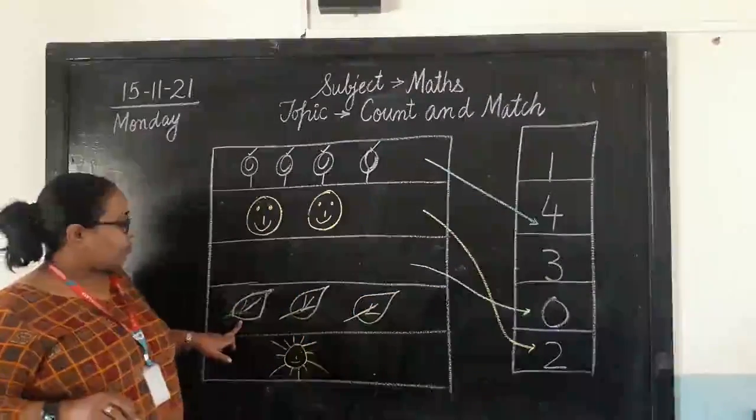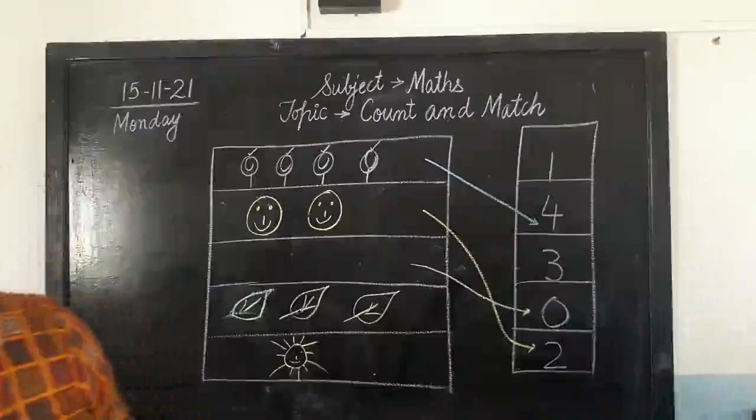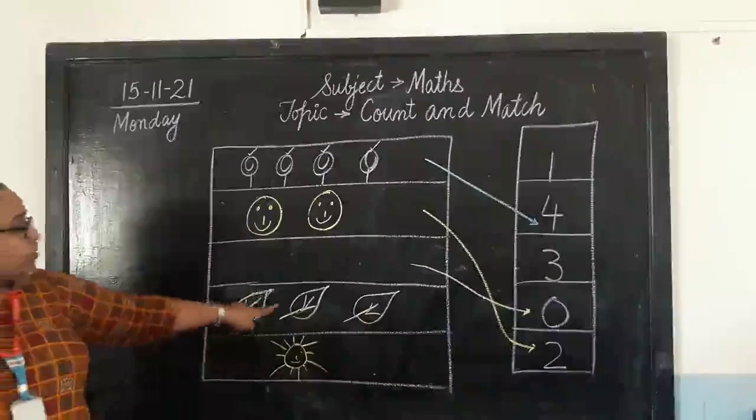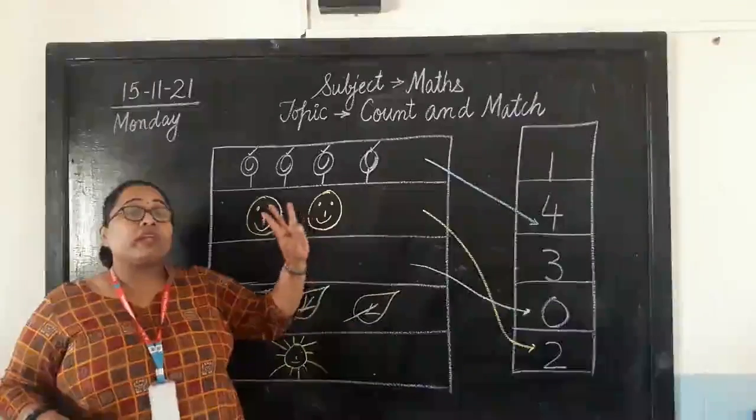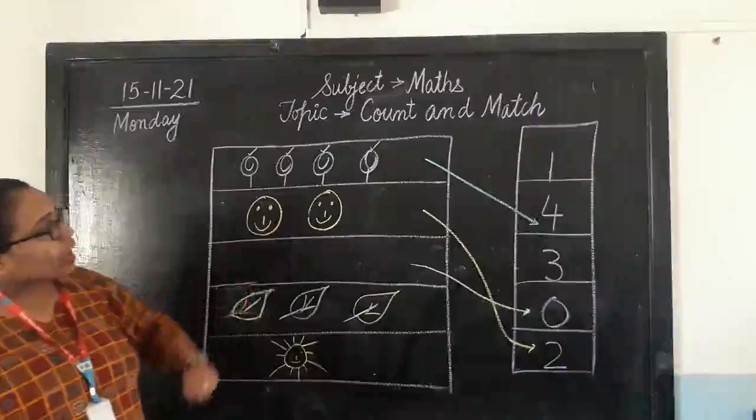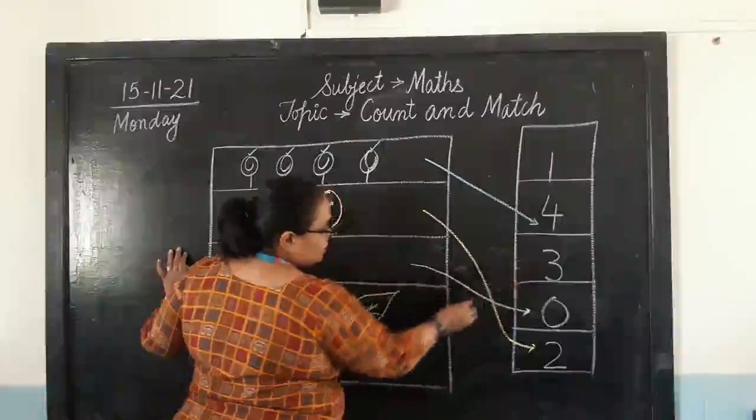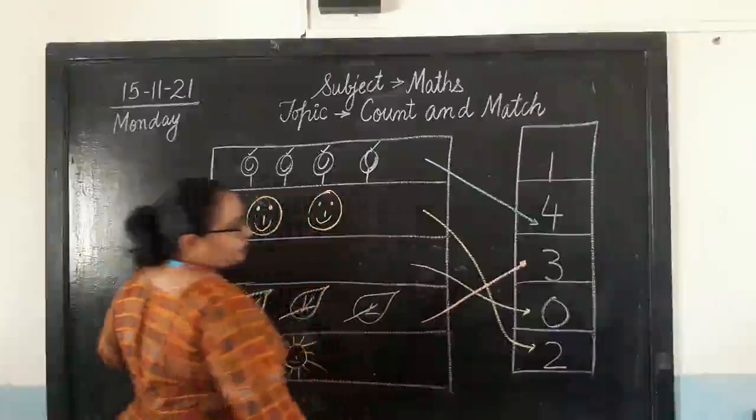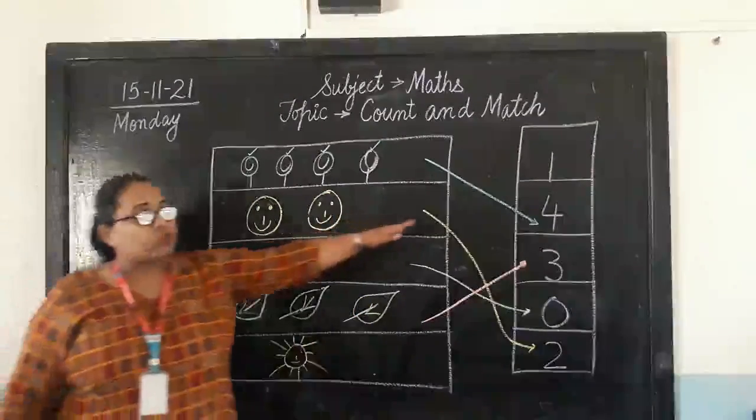Now, next we have leaves. How many leaves we have? Please count them all for me. 1, 2, 3. We have 3 leaves. So, where do we have number 3? We have it here with us. Let's match it like this. So, now, 3 leaves match to the number 3.